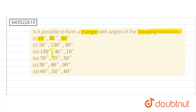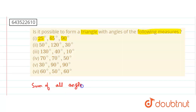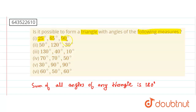We have the property that for any triangle, by the angle sum property, the sum of all angles of any triangle is 180 degrees. We simply check whether the sum of three angles is 180 or not. If it is 180, then it is possible to form a triangle; if not, then it is not possible.